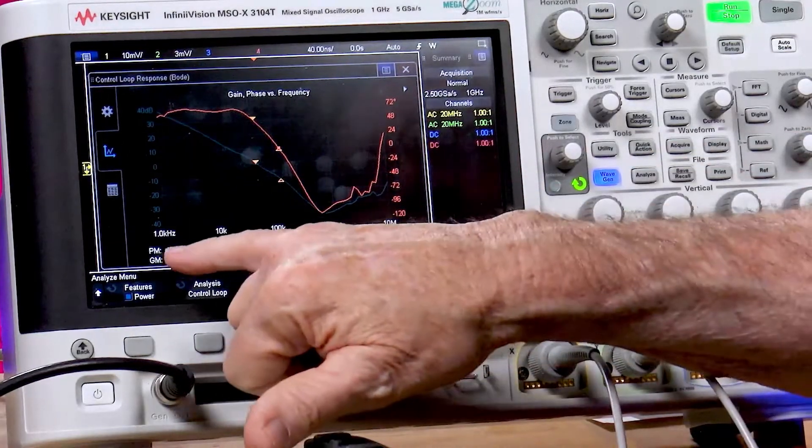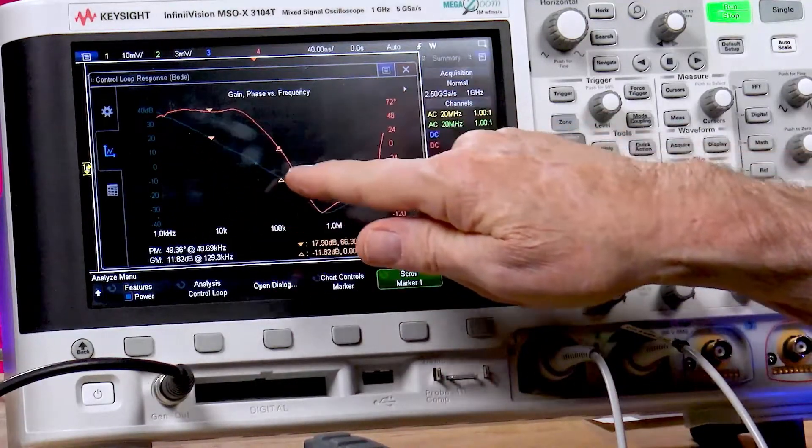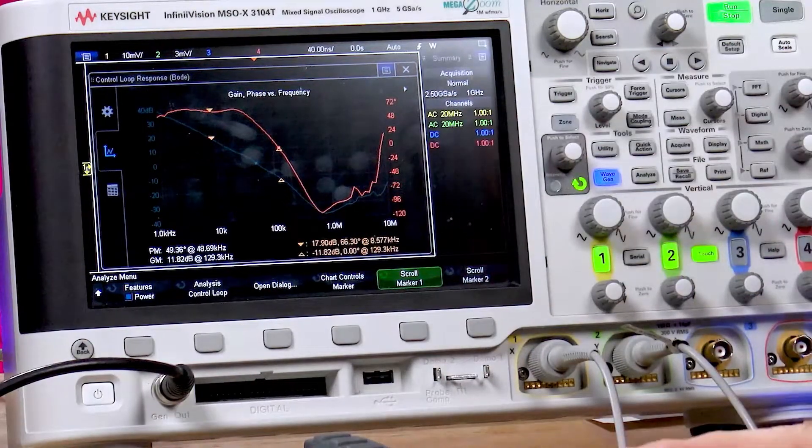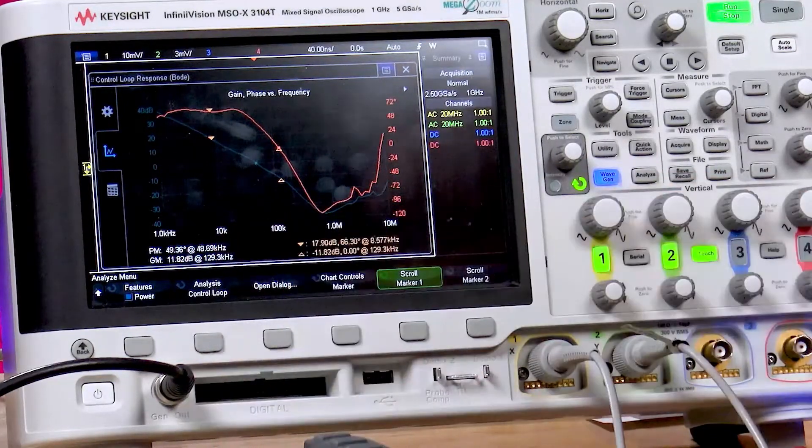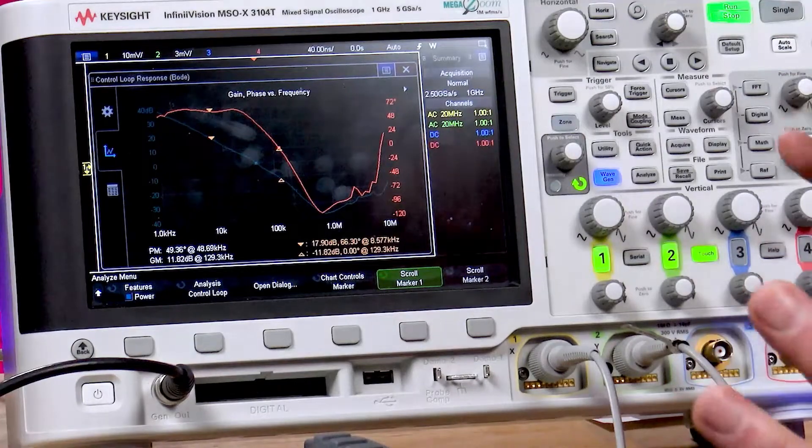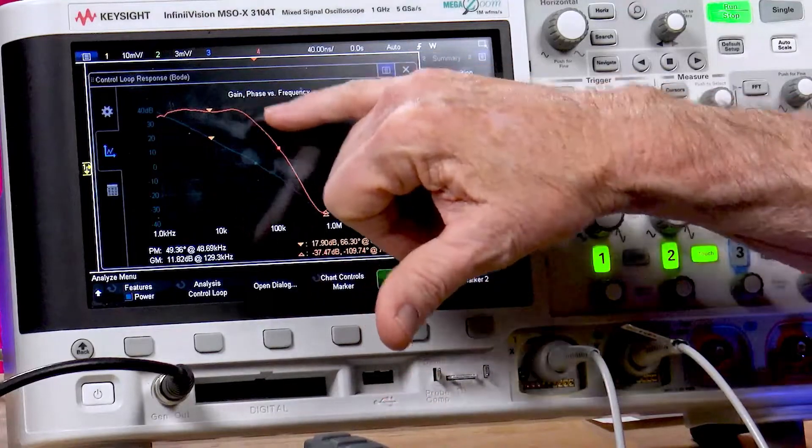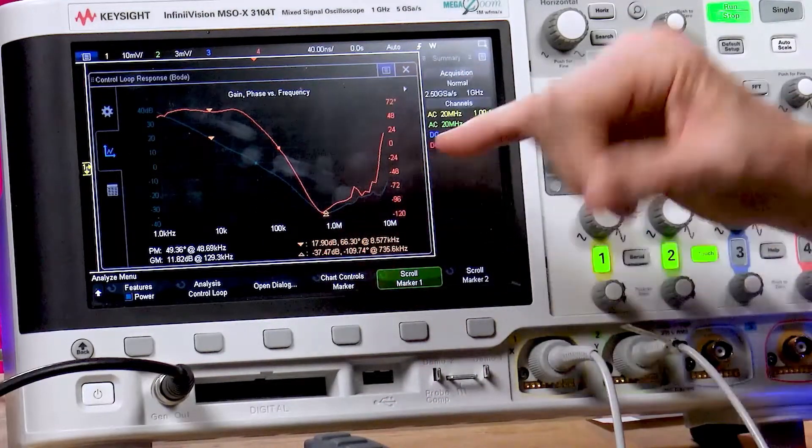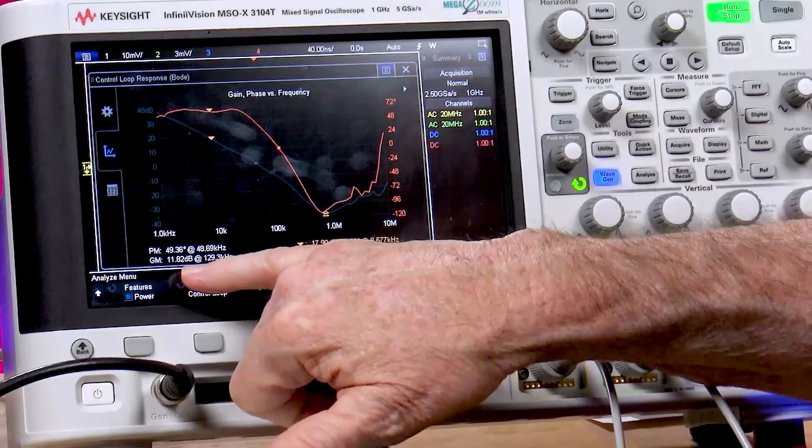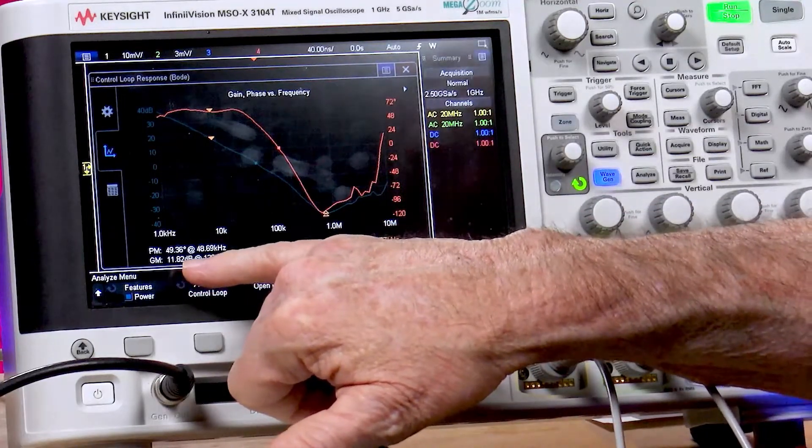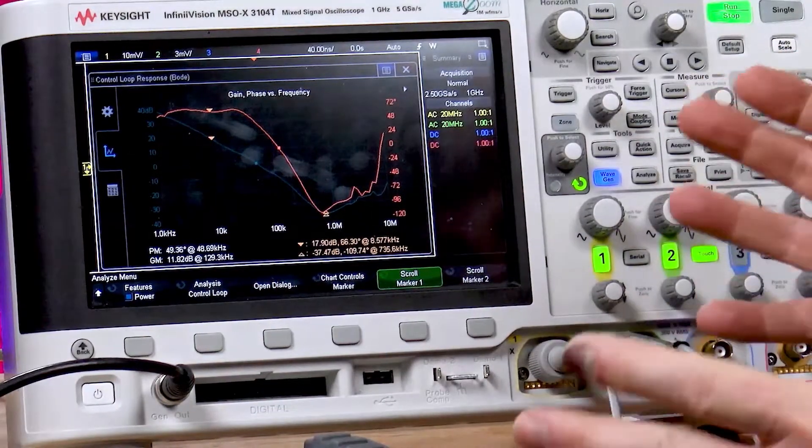When it completes the sweep, it automatically measures what's known as phase margin, which occurs where the gain crosses 0 dB. It says we have 49 degrees at about 50 kilohertz. That is good. It says we're probably not going to oscillate. The other important point is where the phase crosses zero degrees, and that's called gain margin. We have about 12 dB of gain margin at about 129 kilohertz. So this is a good test here.